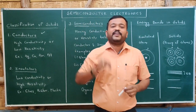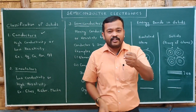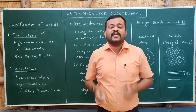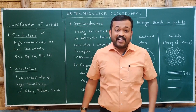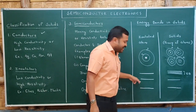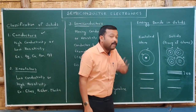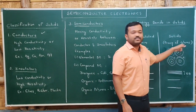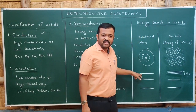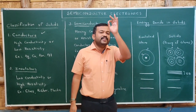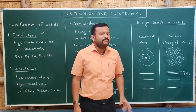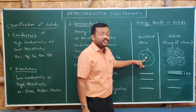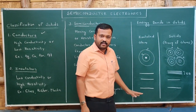Before we go with classification based on band theory, let us understand how bands are formed in solids — that is the energy bands in solids. If there is an isolated atom, according to Bohr's theory, we know that the electrons revolving around the nucleus have a definite energy, and we represent it by energy levels. But when these atoms combine to form solids, with a group of atoms, the energy of the electron will be disturbed.